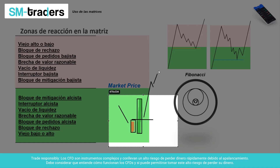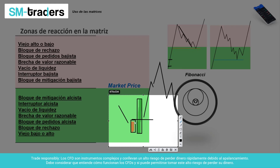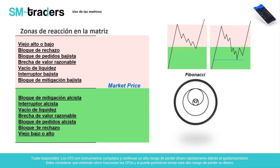El precio empieza a subir. Imaginemos que el bloque de pedidos, esta vela rojita, está aquí en este movimiento bajista. Cuando el precio empieza a bajar, va a buscar algunas zonas de interés: bien sea el bloque de pedidos, brecha de valor razonable o vacíos de liquidez. Vas a encontrar en orden de jerarquía: bloque de pedidos, bloque de rechazo, bloque de pedidos, y luego el precio se pudiera quedar en una brecha de valor razonable haciendo algo que se llama IOFED — Institutional Order Flow Entry Drill. Ese concepto es cuando se reequilibra superficial o totalmente una brecha y el precio no necesita llegar a mitigar órdenes en un bloque.